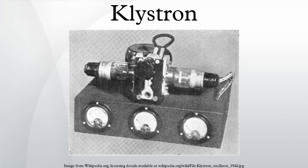The brothers Russell and Sigurd Varian of Stanford University are the inventors of the klystron. Their prototype was completed and demonstrated successfully on August 30, 1937. Upon publication in 1939, news of the klystron immediately influenced the work of U.S. and U.K. researchers working on radar equipment. The Varians went on to found Varian Associates to commercialize the technology.